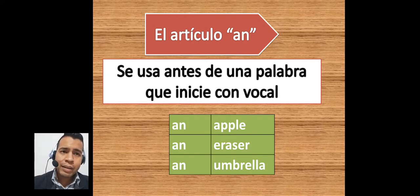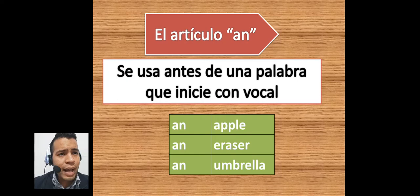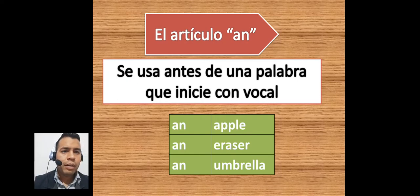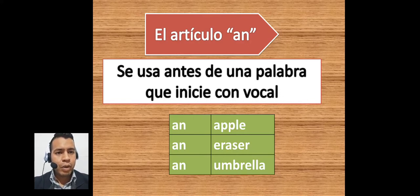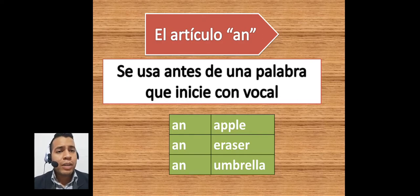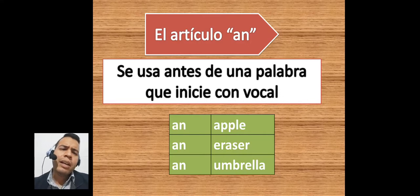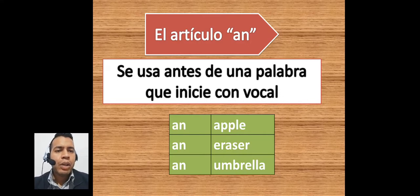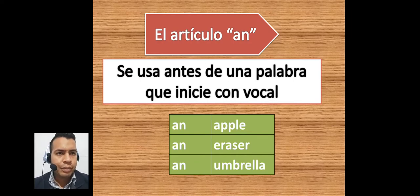Por otra parte, tenemos el artículo 'an', y este lo vamos a utilizar antes de una palabra que inicie con vocal. For example: apple, eraser, umbrella. Vemos que las tres palabras inician con una vocal. Por tal razón, no utilizo 'a' sino 'an', y esto lo hace más fácil de pronunciar. Yo digo: an apple, an eraser, an umbrella.